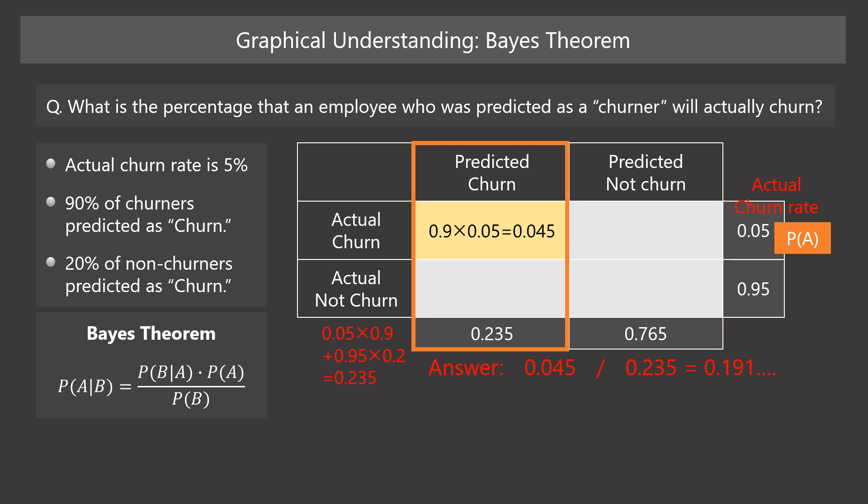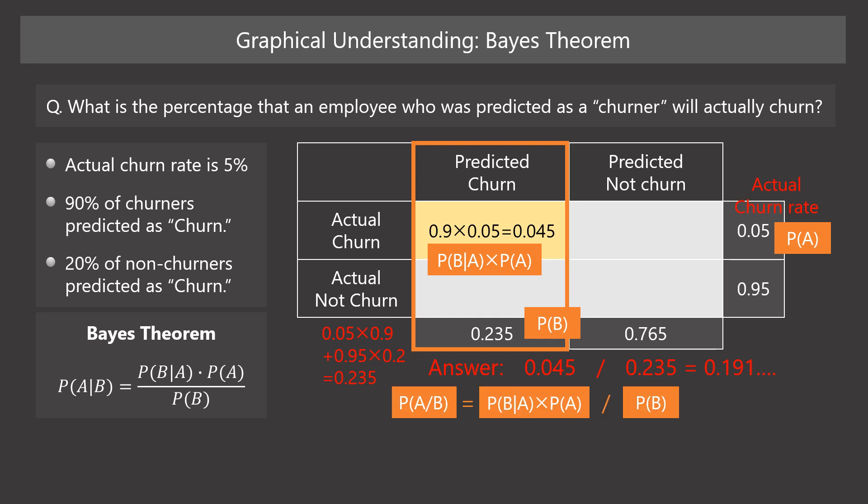In the notation of the previous slide, actual churn is event A, so its probability is A's probability. Predicted churn is event B, so the probability of predicted churn is B's probability. On the upper left cell, actual and predicted churn is the probability of A given B multiplied by A's probability. So we can see that the equation we created to find the answer is that of Bayes' theorem.